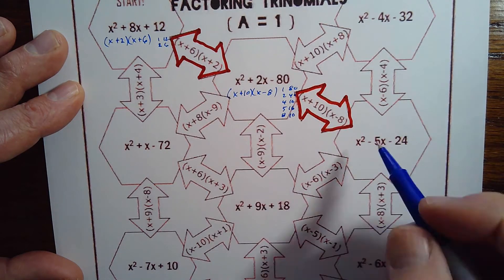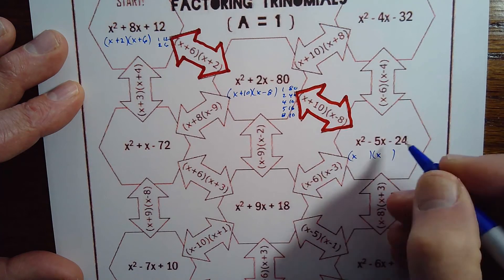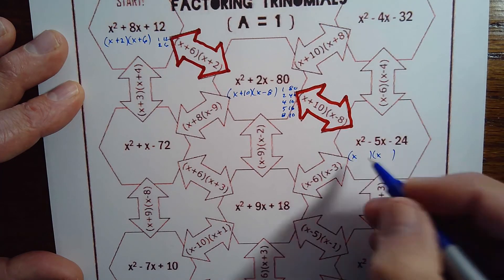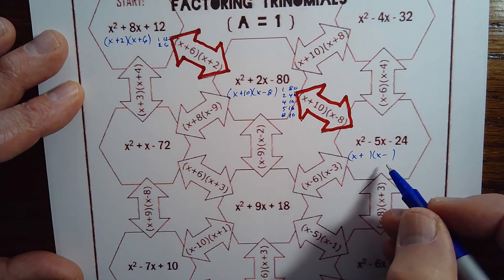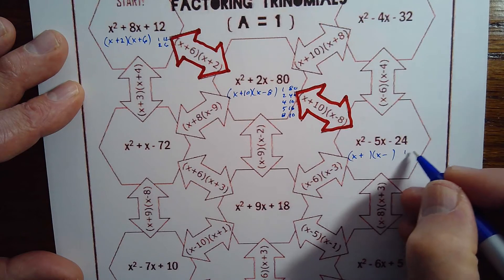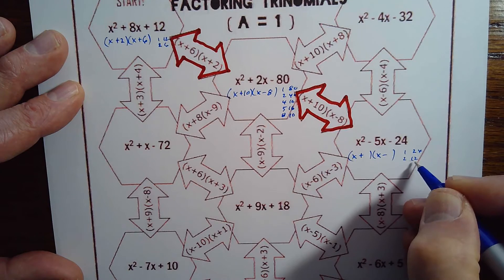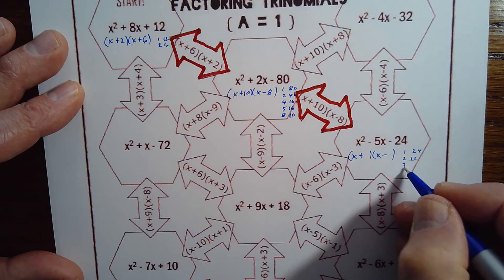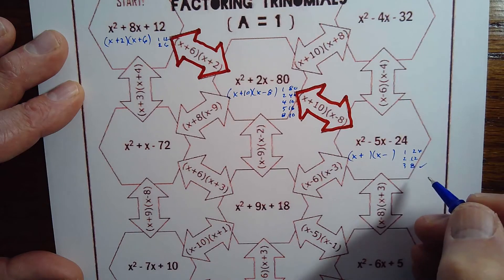Alright, now we'll do this one. x and x for our first parts, and then it's a minus sign here, so there's a plus and a minus in my two different binomials. So 1 and 24, they aren't 5 apart. 2 and 12, they're 10 apart, getting closer. 3 and 8, those are 5 apart. Winner winner.